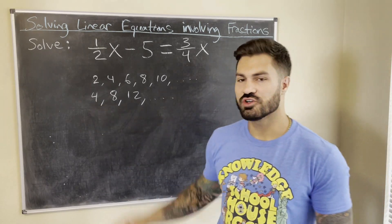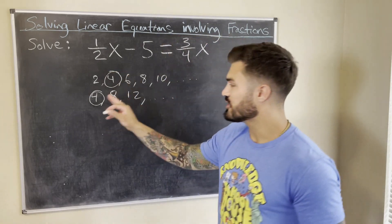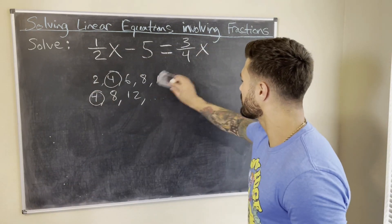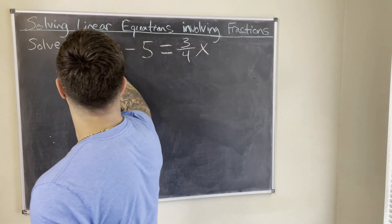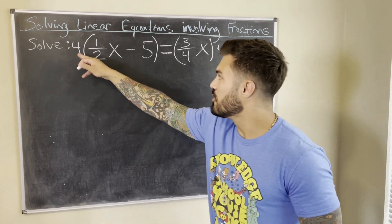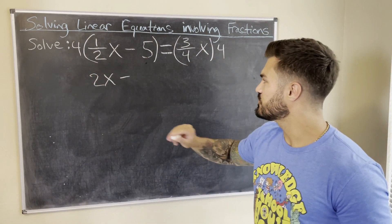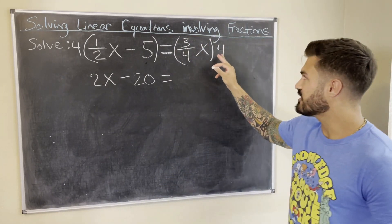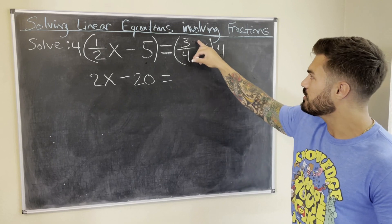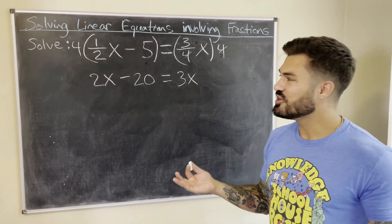Any integer is a multiple of itself — 4 times 1 is 4 — so 4 is a common multiple, and it turns out the least common multiple between 2 and 4 is 4. So that's our least common denominator. We multiply both sides by 4: on the left, 4 over 2 is 2, so we get 2x; minus 5 times 4 is 20. On the right, 4 cancels with 4 immediately — no arithmetic needed — leaving just 3x.